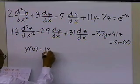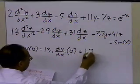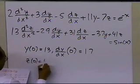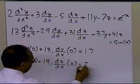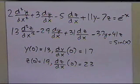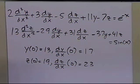For this system, we need initial conditions: an initial condition on y, on the first derivative of y, on z, and on the derivative of z. To solve this set of coupled ordinary differential equations using numerical methods such as Euler's and Runge-Kutta, we need to reduce these coupled ODEs into a set of first-order ordinary differential equations, since the numerical methods only work with first-order differential equations.